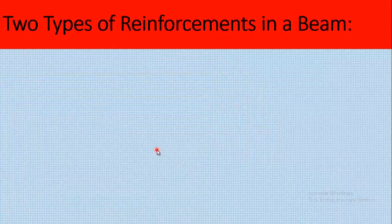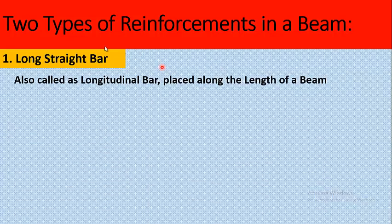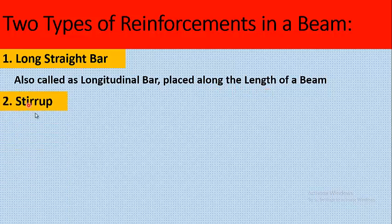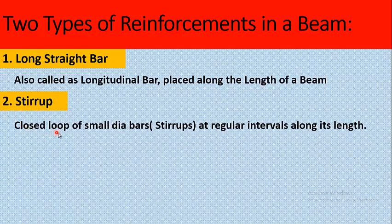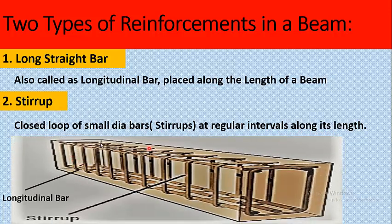There are two types of reinforcement in beam. Number one, the long straight bar, also called the longitudinal bar, placed along the length of a beam. The other type of reinforcement is the stirrup. A closed loop of small diameter bars placed at regular intervals along the length of a beam is called a stirrup. As you can see in this picture, the long bars are called longitudinal reinforcement bars, and the bars in square shape provided at regular intervals are called stirrups.